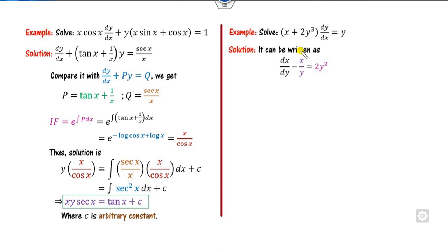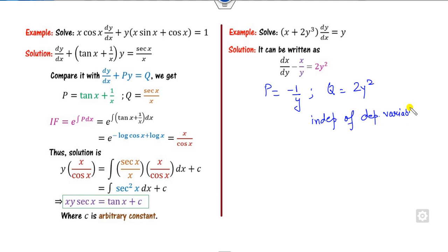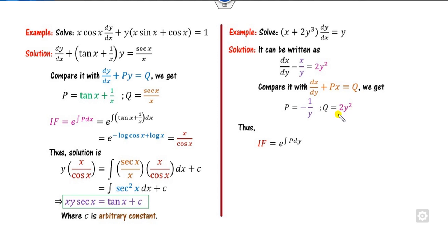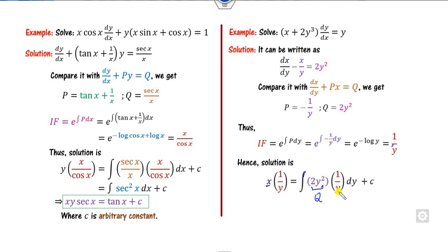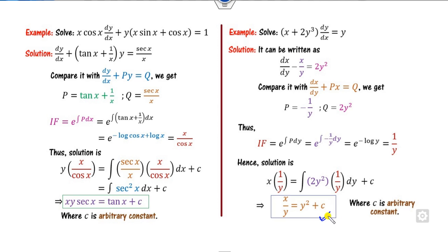For the second example, this is linear in y, so write it in terms of dx/dy. What is p? The coefficient of x is minus 1/y. What is q? It is 2y², which is independent of the dependent variable x. So p and q are independent of x and we can apply the integrating factor. The integrating factor is e raised to the power of the integral of minus 1/y dy, which is e^(minus log y) = y^(-1) = 1/y. The solution is x·(1/y) = integral of 2y²·(1/y) dy = integral of 2y dy = y² + c.